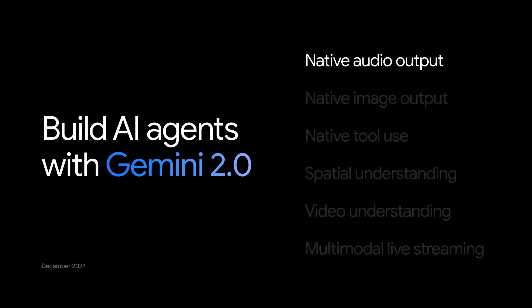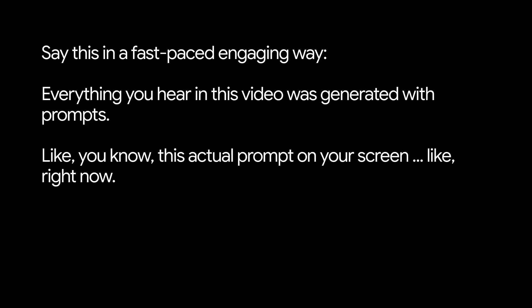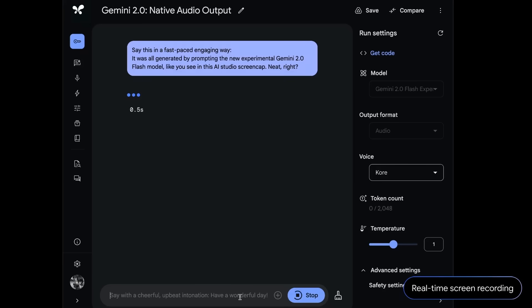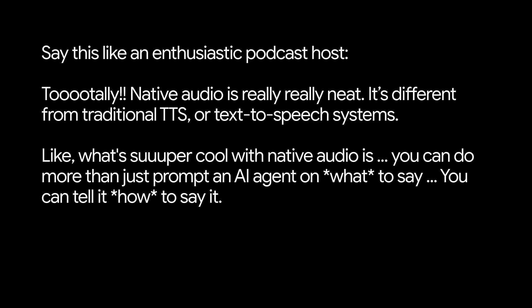Let's talk about native audio. Gemini 2.0 introduces multilingual native audio output. You're actually hearing it right now — everything you hear in this video was generated with prompts like the one on your screen, all generated by prompting the new experimental Gemini 2.0 Flash model as shown in this AI Studio screencap. Native audio is really neat. It's different from traditional TTS or text-to-speech systems. What's super cool is you can do more than just prompt an AI agent on what to say — you can tell it how to say it.